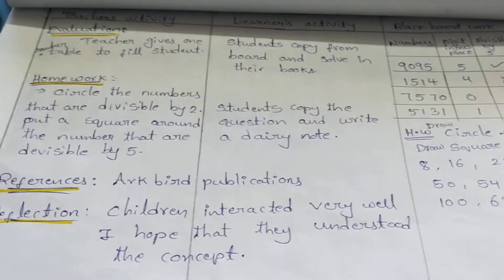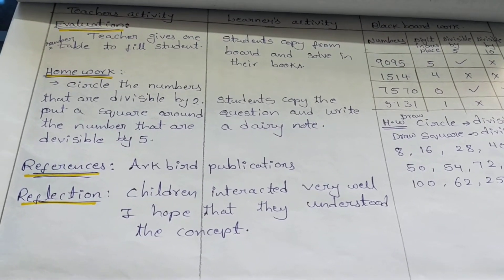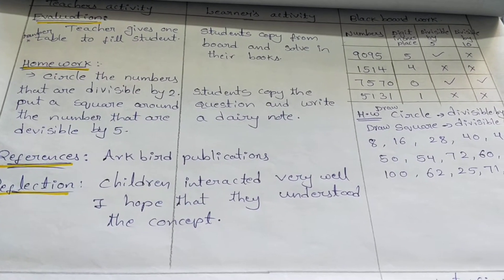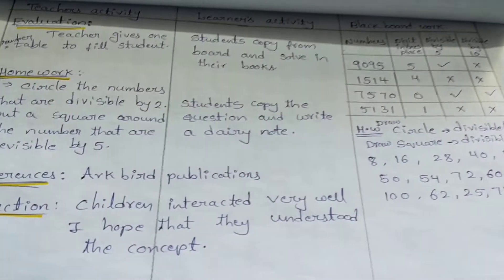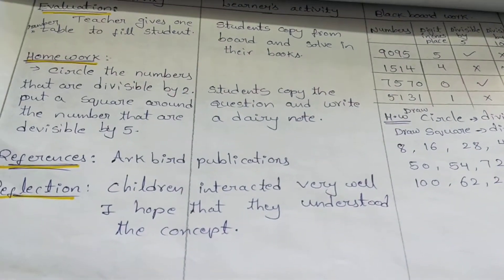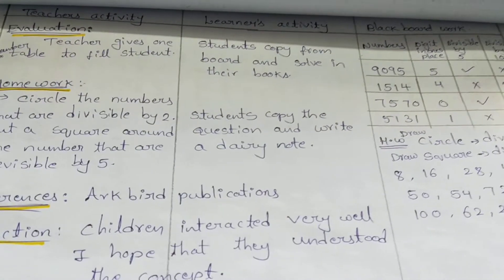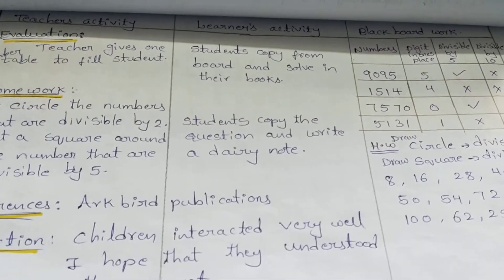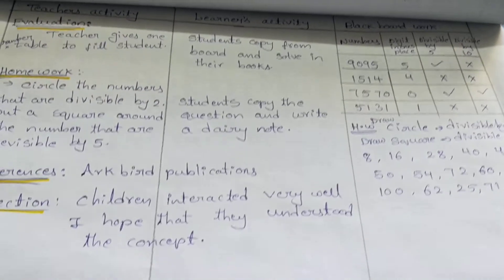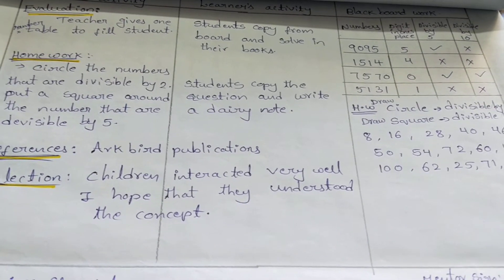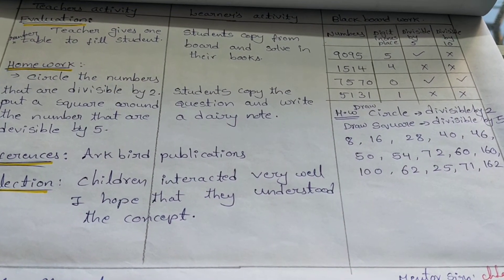Please excuse any spelling mistakes. Numbers are written on the board, and students will determine whether each number is divisible by 2, divisible by 5, or divisible by 10. The lesson concludes with references and reflections. Thank you.